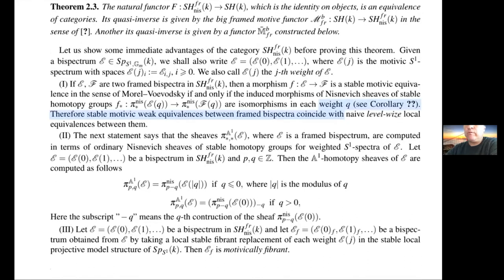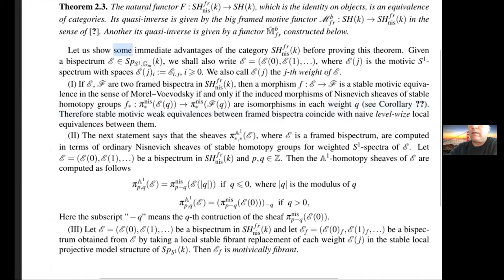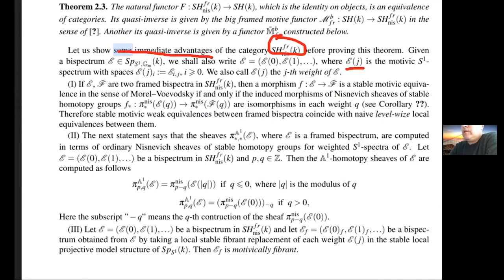Before proving this theorem, let me show some immediate advantages of the category SH_frame_Nis(k). First, given a bispectrum E, we shall write it as (E(0), E(1), ...) where E(j) is the motivic S^1-spectrum with spaces E(j)_i = E_{i,j} for all i ≥ 0. We call the S^1-spectrum E(j) the j-th weight of E.